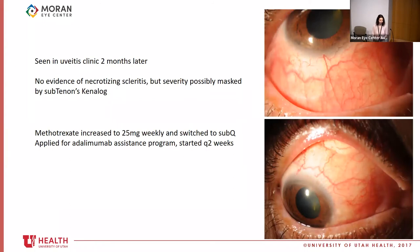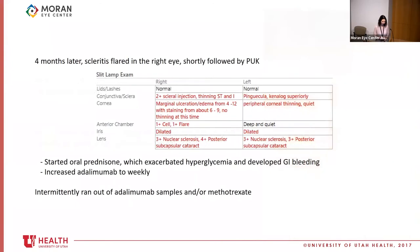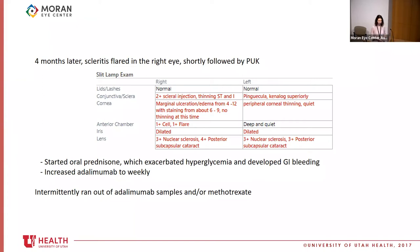Four months later, despite initial improvement, her scleritis in the right eye flares more severely, and for the first time she develops peripheral ulcerative keratitis (PUK) with marginal ulceration of the right cornea with fluorescein staining. She is started on oral prednisone, which is problematic given her diabetes, and she develops GI bleeding. Her Humira, conventionally prescribed every two weeks, is increased to weekly given some evidence that this can improve disease remission in minimally responsive patients.